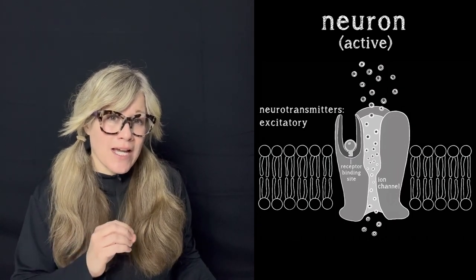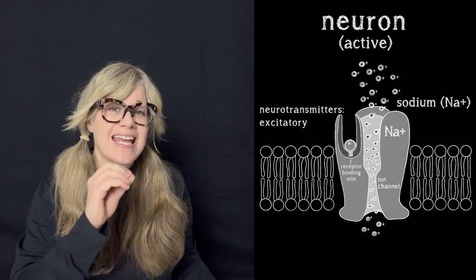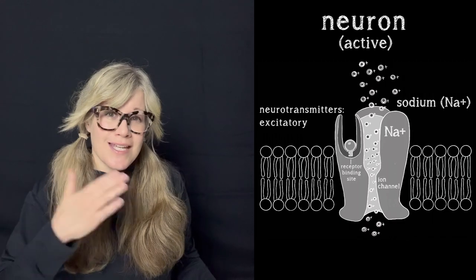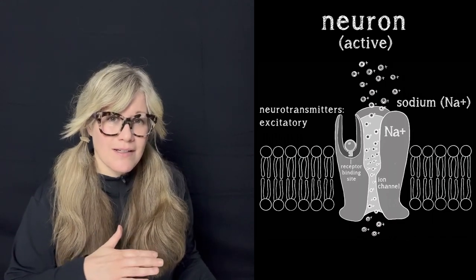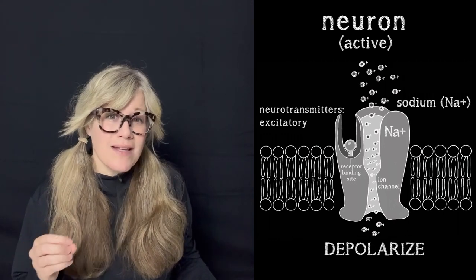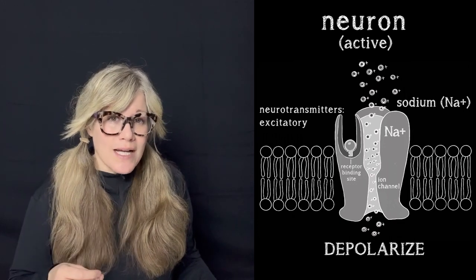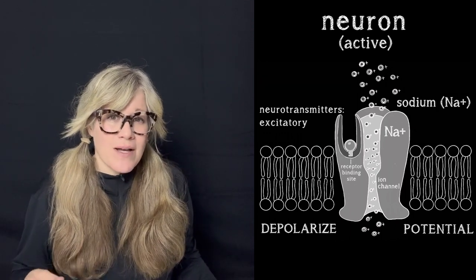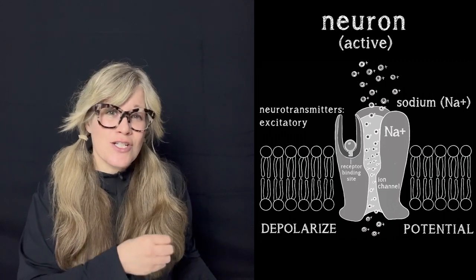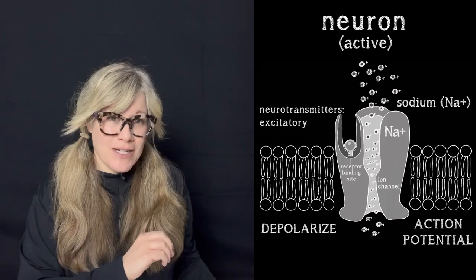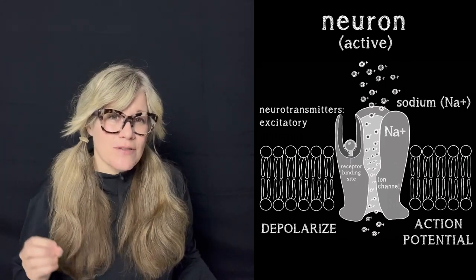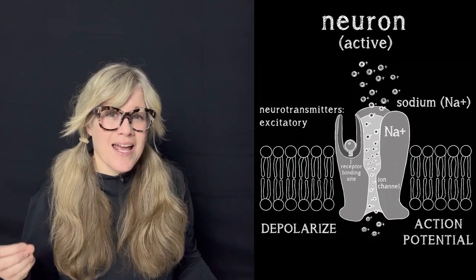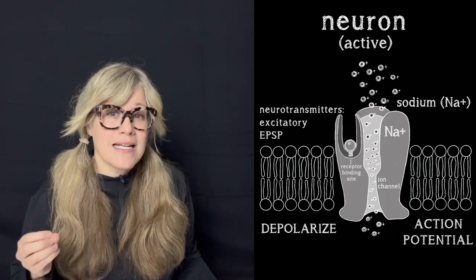Excitatory neurotransmitters open ion channels that allow the passage of sodium ions across the membrane into the postsynaptic neuron. Sodium is a positively charged ion, so what's going to happen to the intracellular side of the membrane when loads of positive ions enter? It depolarizes, because now there are more positive ions inside the cell. When it becomes depolarized, it is more likely to create a potential. If an abundance of positively charged ions enter the intracellular space, it can change the voltage of the cell from resting potential to an action potential a little bit further down the neuron. The action potential is what keeps the signal moving. An excitatory potential at an excitatory synapse is known as an excitatory postsynaptic potential, or EPSP.